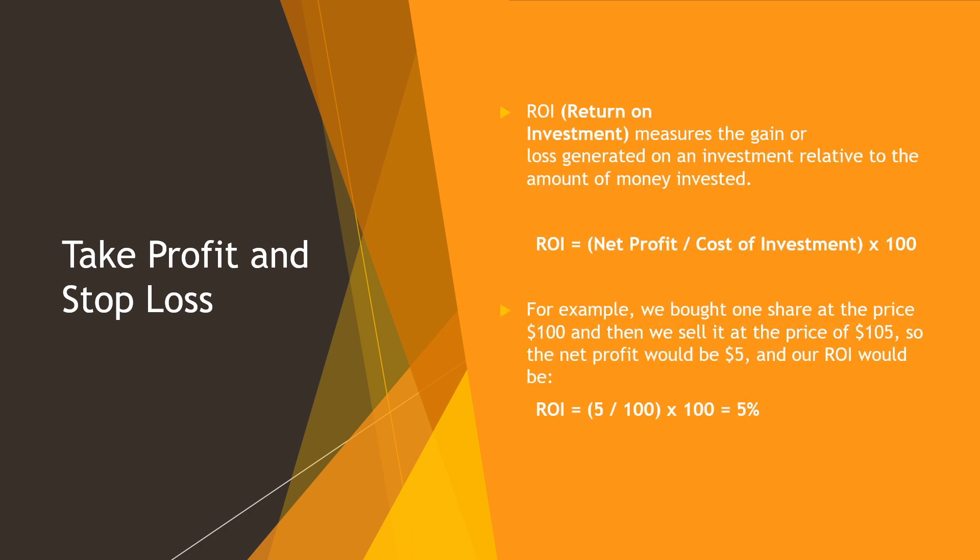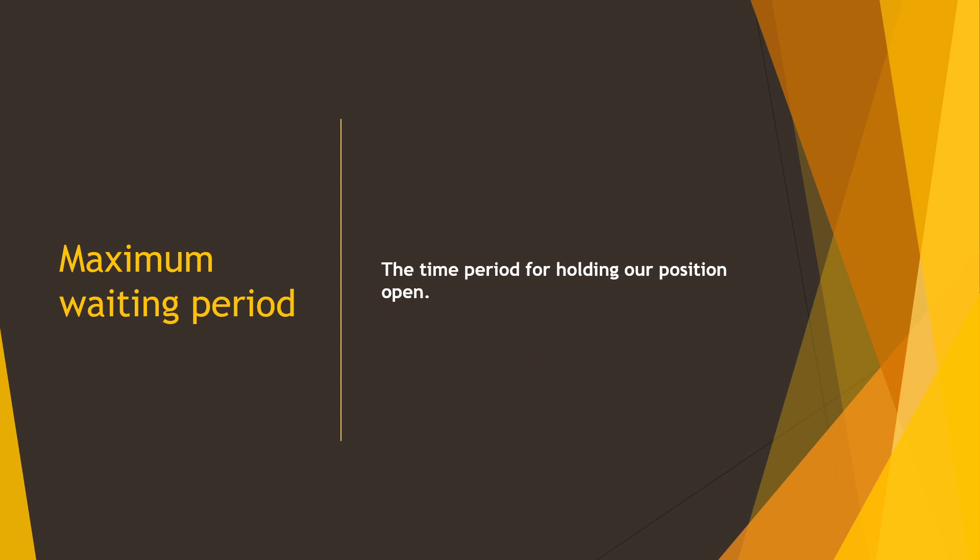For example, we bought our shares at the price of 100 and then sold them at the price of 105. So we get a 5% move in price and receive a 5% return on our investment. We have defined our exit levels — take profit and stop loss. We also don't want to wait forever until the price reaches our profit or loss levels, so we will define the maximum time period for holding our position. Actually, I will use an amount of traded volume instead of the time period — it will be clear after you watch the next episode, where I will prepare the data.